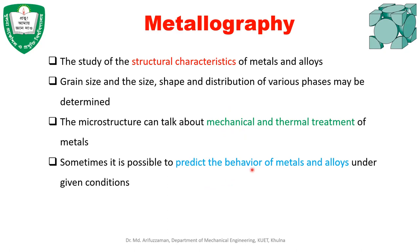It is also possible to predict the behavior of metals or alloys under given conditions — for a certain temperature or loading condition — using the microstructure. To investigate the microstructure, we need metallography: we need a metal specimen which we prepare for investigating the microstructure through a metallurgical microscope.